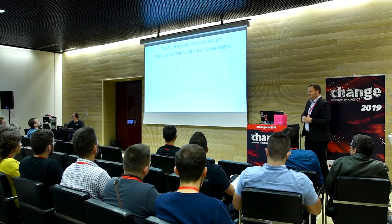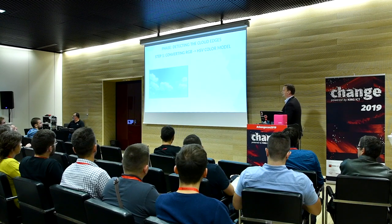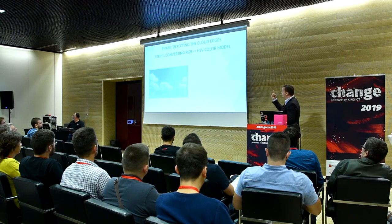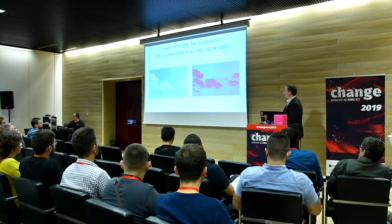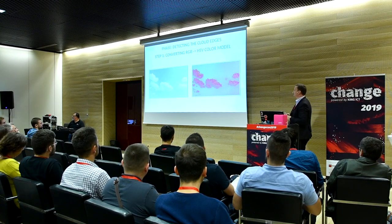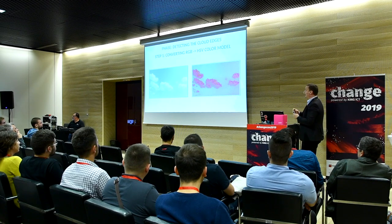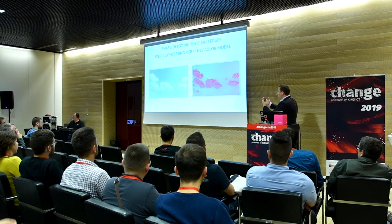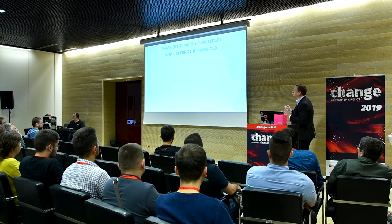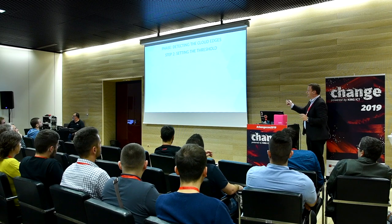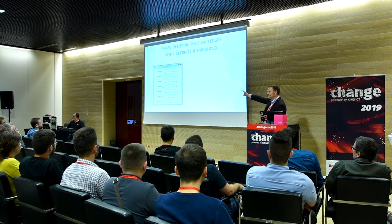Step one: we need to convert the initial image to something more adjustable for image processing. This means we need to switch from red, green, and blue combination to H, S, and V — hue, saturation, and value. With the same image you get something that looks a little bit different. I'm not interested in blue colors; I just want to detect the borders and detect the clouds in the sky, so this color space was just right for me.